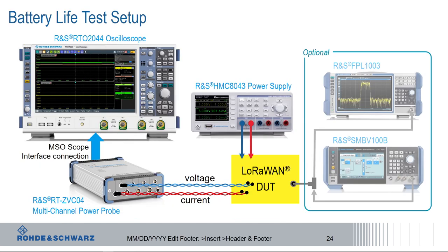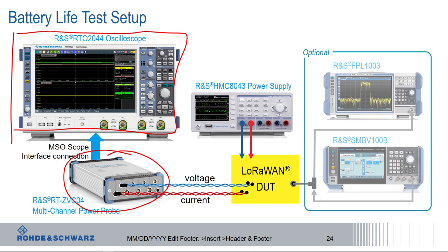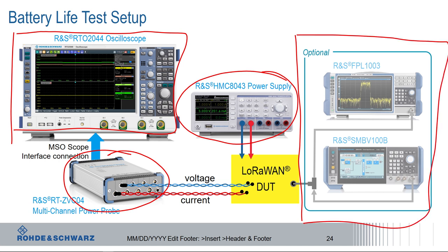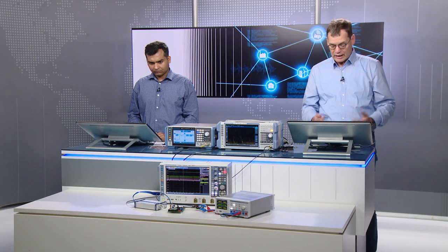For power consumption measurements, we recommend our RTO oscilloscope together with RTZVC multi-channel power probes, allowing simultaneous current and voltage measurement on four different supply rails. The setup also uses a power supply and can optionally be extended with the spectrum analyzer and signal generator seen in earlier demos. Nassif, could you show us some power consumption measurements?